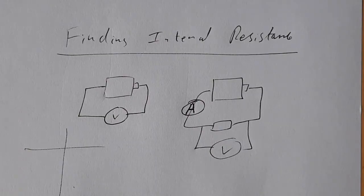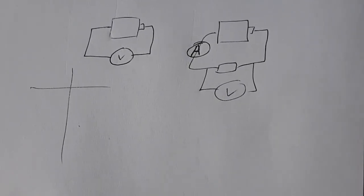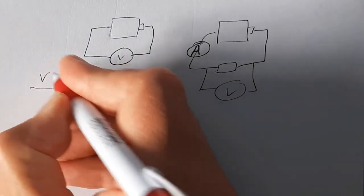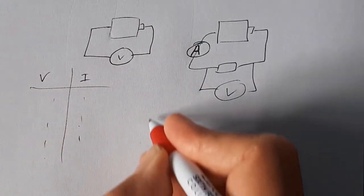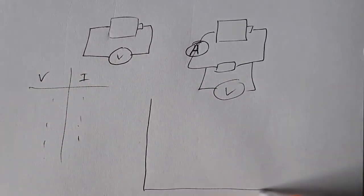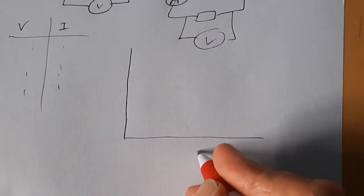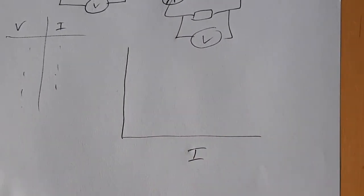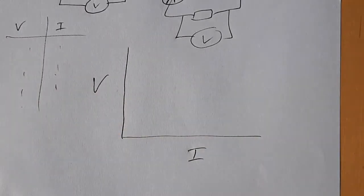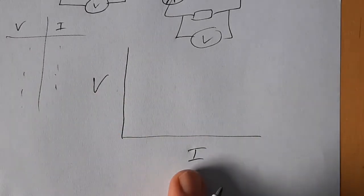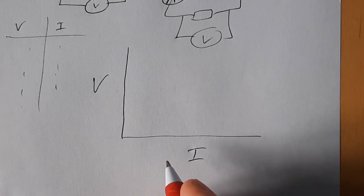So we start off with make a table, wouldn't we, of voltage and current. And then we plot a graph. We plot the graph, imagining current is the independent variable, V is the dependent variable. Actually set that by setting the resistance. So what's the graph going to look like?